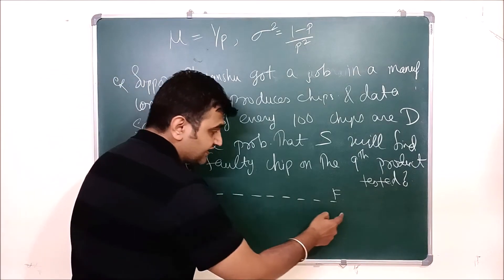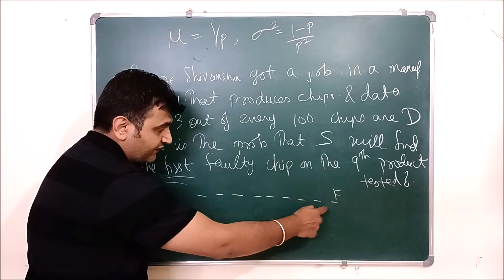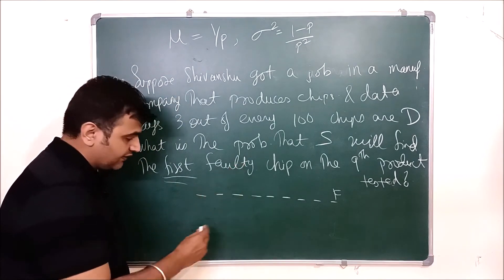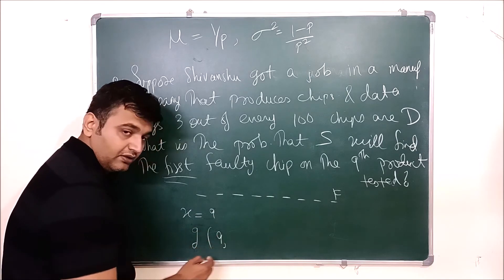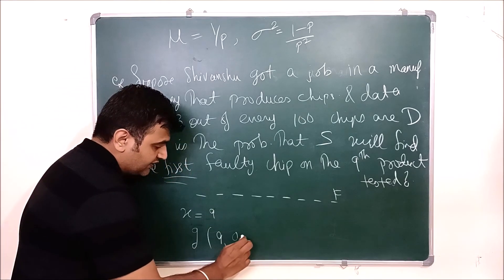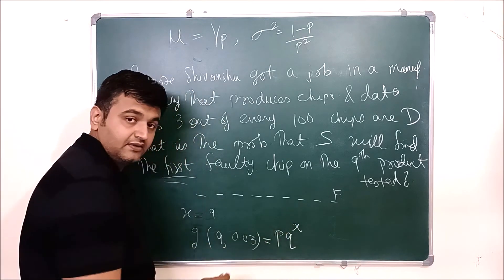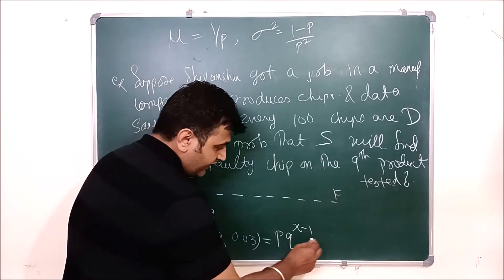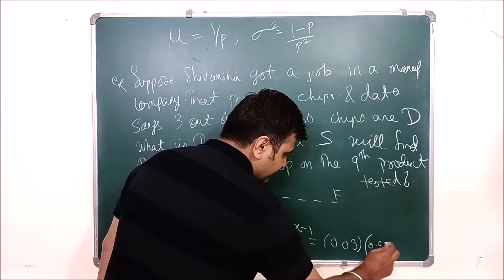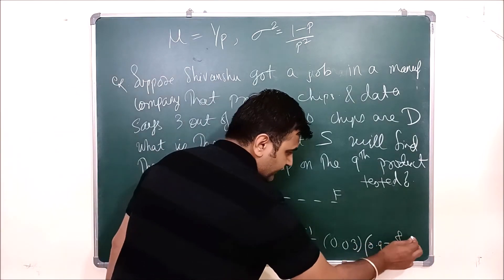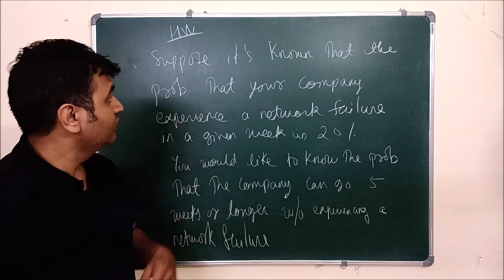Finding a faulty chip is Shivanshu's success because his job is to find defective chips. Since 'first' comes into the picture, think of geometric distribution. He needs nine trials, so x equals nine. g(9, p) where p is 0.03 (3 out of 100). The formula is p times q raised to x minus one, so: 0.03 times 0.97 raised to the power 8. Do this multiplication to get your answer.